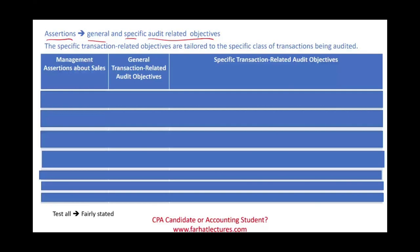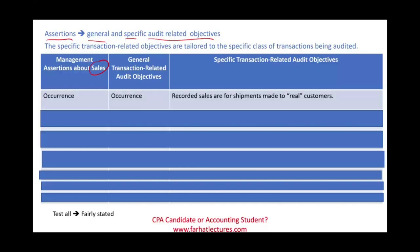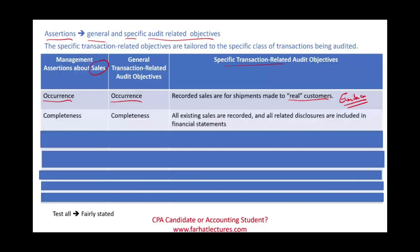To illustrate with a practical example, we look at sales, because sales is a class of transaction. When the company claims occurrence, our general related objective is occurrence, and our specific transaction-related audit objective is: recorded sales are for shipment to real customers. For completeness, the company asserts they accounted for all transactions; our job is to collect evidence to see if we captured all the sales and all related disclosures are included.